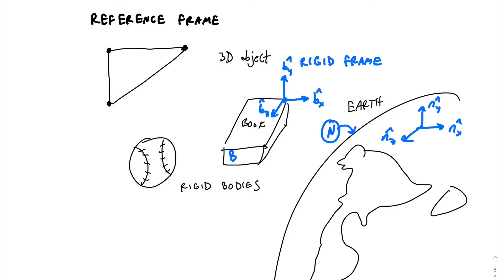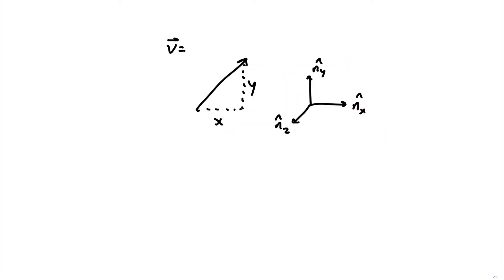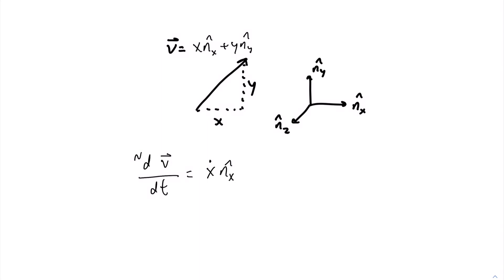This rigid frame is important for writing vectors related to any given rigid body's reference frame. Now, what does it mean to take a time derivative of a vector relative to a reference frame? If we have vector V written in terms of reference frame N — say X·NX plus Y·NY — to take the time derivative relative to N, we simply take the time derivative of the X component and the Y component. This is pretty straightforward, but it only works if vector V is already defined in terms of reference frame N.